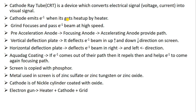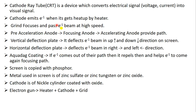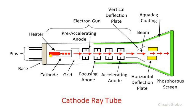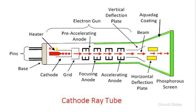Cathode emits electrons when it gets heated by the heater. When we apply voltage or current, it will convert into current. After that, there is a base and then the heater. After applying voltage or current, the heater will get heated. If the heater gets heated, it will emit the electron — it releases the electron.